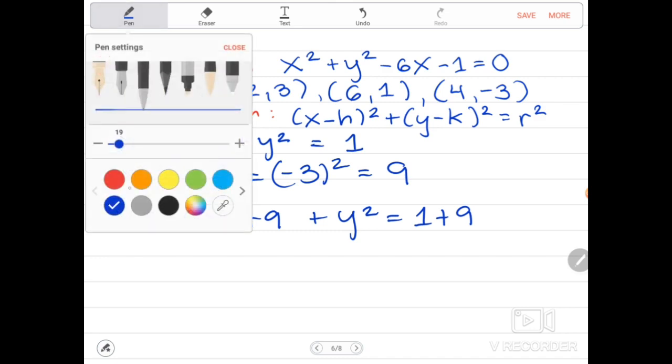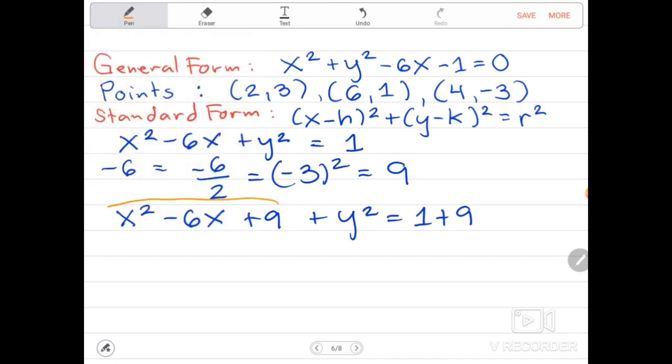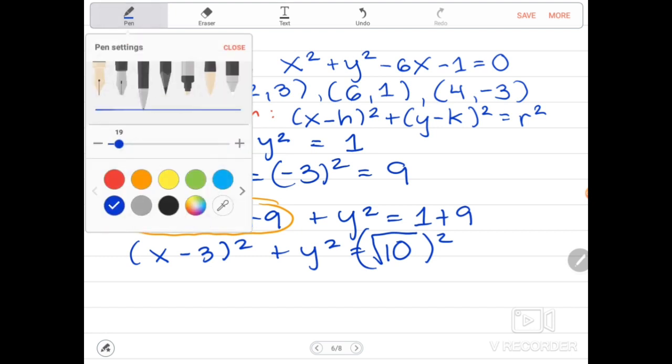x squared minus 6x plus 9 plus y squared equals 1 plus 9. So what will be the factor of x squared minus 6x plus 9? We will be having x minus 3 squared plus y squared equals 10. We are going to get the square root of the radius then squared, so it will become square root of 10 squared. That will be the value of our radius.